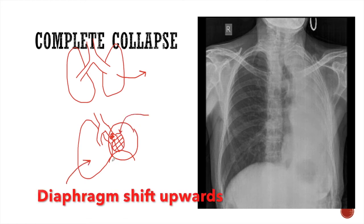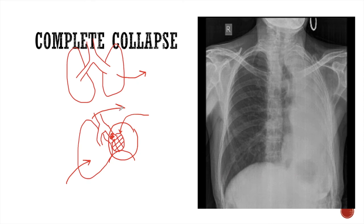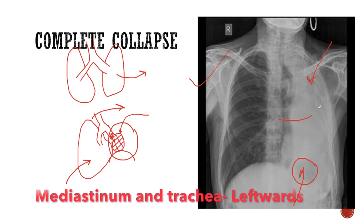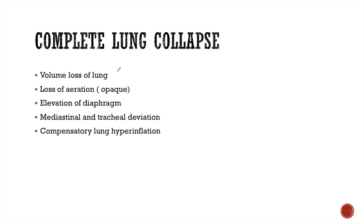When the volume of the lung decreases, the diaphragm shifts upwards. The mediastinum and trachea shift towards the collapsed side to compensate for the volume loss. This is what is seen in this x-ray — the left lung has completely collapsed and is no longer aerated. The left diaphragm is shifted upwards and the gas bubble of the stomach is shifted upwards. The mediastinum and trachea have shifted towards the left side. The collapsed lung appears completely opaque. In complete lung collapse, we will see volume loss, opacity due to loss of aeration, elevation of the diaphragm on the same side, mediastinal and tracheal deviation towards the same side, and hyperinflation of the opposite lung.